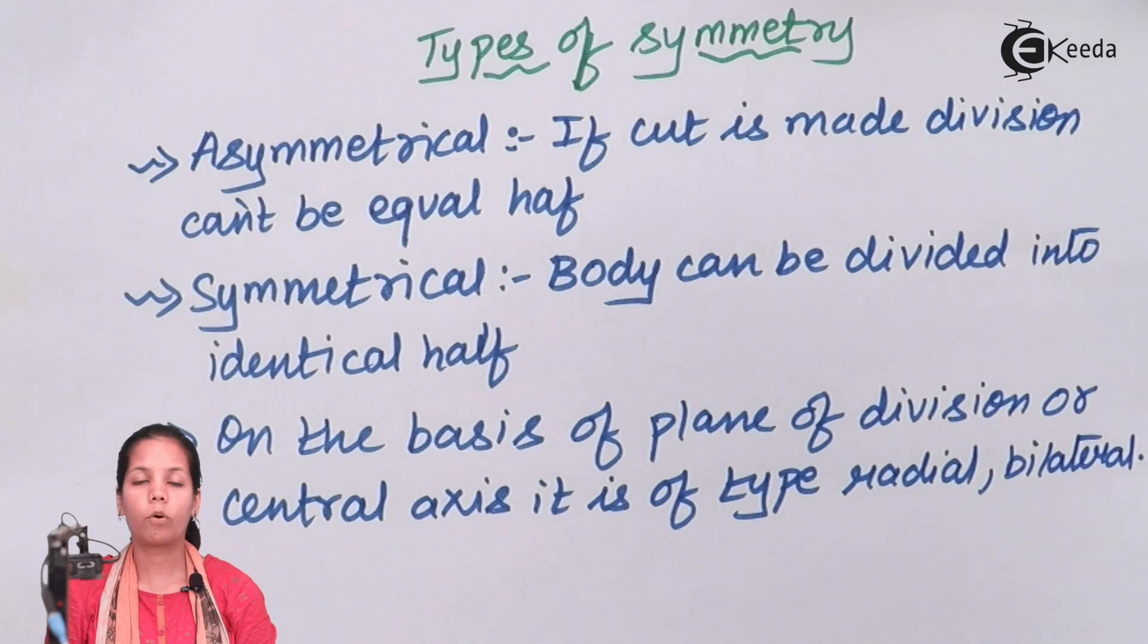Animals in kingdom animalia can be broadly divided into two different categories depending upon the symmetry of their body. Some are asymmetrical whereas some can have proper symmetry to their body. So what is this asymmetry?